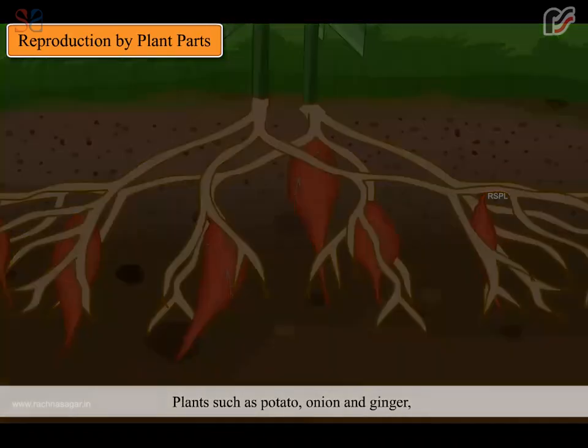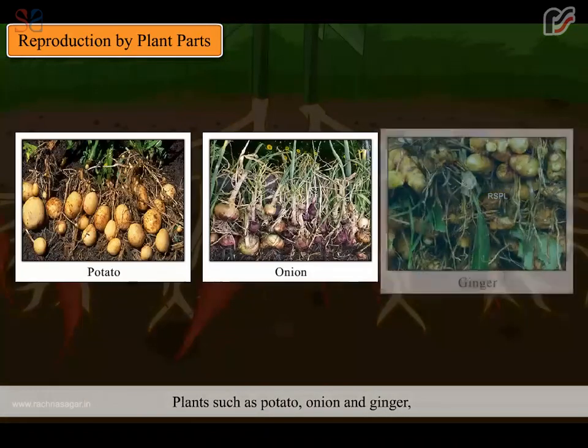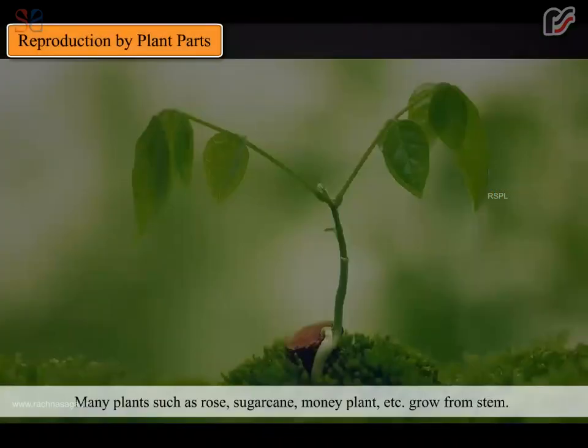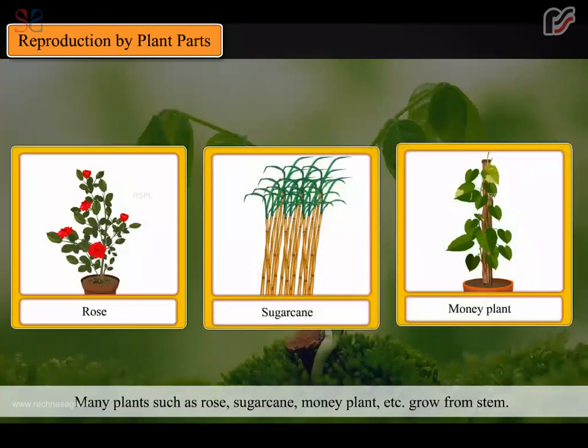Plants such as potato, onion and ginger, a new plant grows from the buds of underground stem. Many plants such as rose, sugarcane, money plant etc. grow from stem.